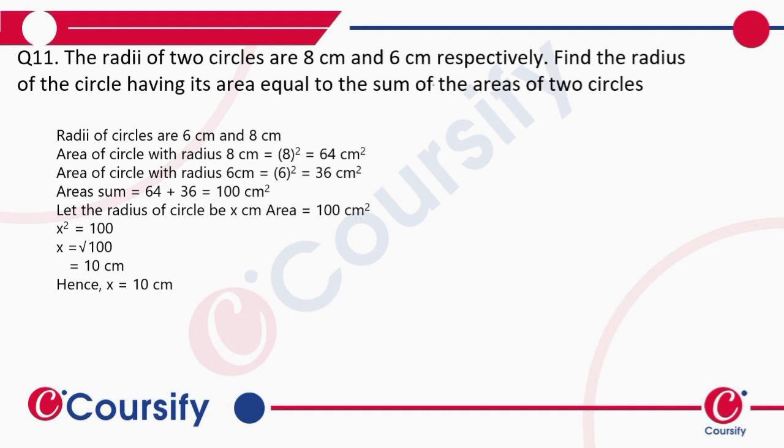One circle has radius 8 centimeters and the other is 6 centimeters. So first, we'll individually find out the areas of the circles with the given radii.